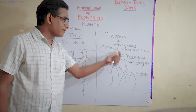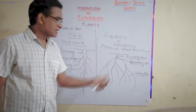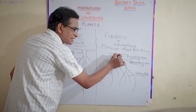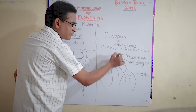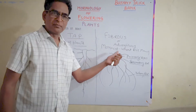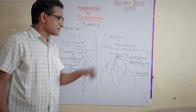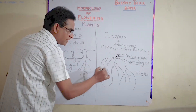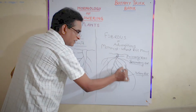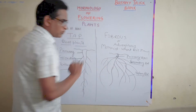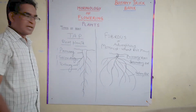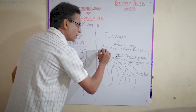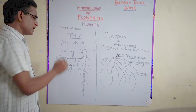In fibrous or adventitious roots, the primary root which appears disappears after a very short time. The secondary and tertiary roots which are formed develop more than the primary root. This is the characteristic feature of monocot plants like wheat, rice, and maize.